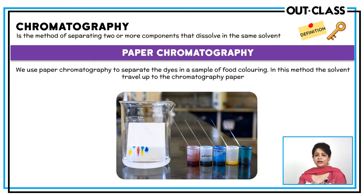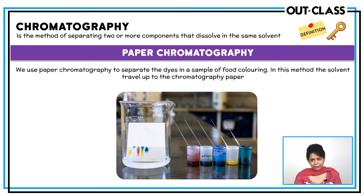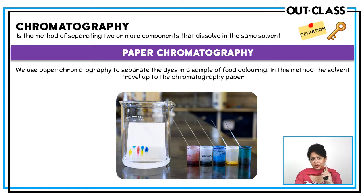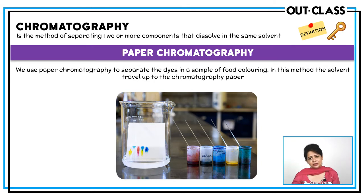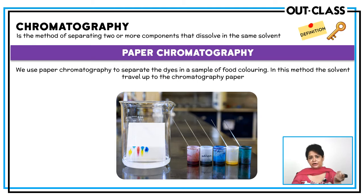Mostly we use chromatography to separate colour dyes, to find how many different pigments or pure substances make up each dye. Chromatography can also be applied to amino acids, hydrolytic products of proteins, hydrolytic products of carbohydrates, and simple sugars — all can be separated and identified by chromatography.